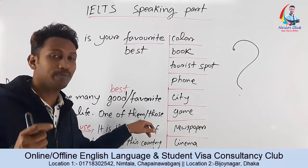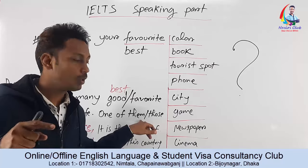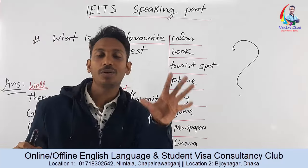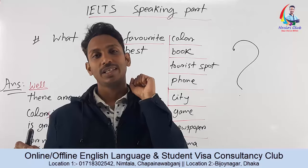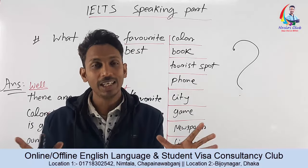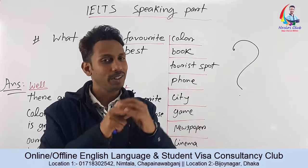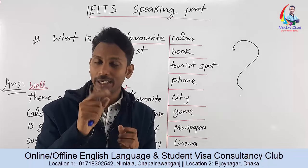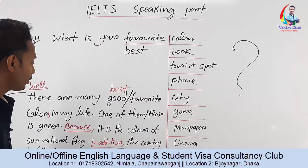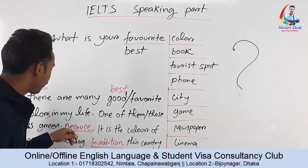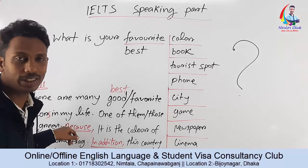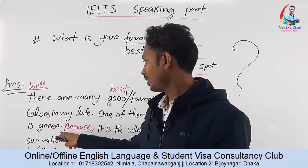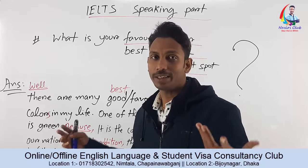After saying there are many favorites, you narrow it down using the phrase 'one of them.' For example: 'One of them, one of them — or one of those — is green.' Then you add: 'That color is green. That color is beautiful. It is my favorite color.'